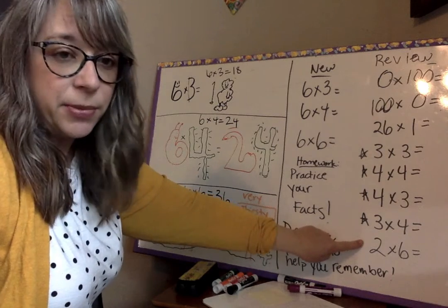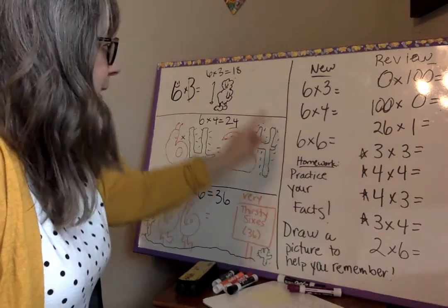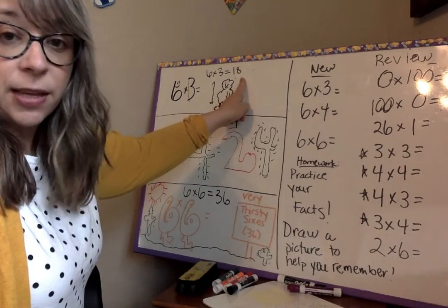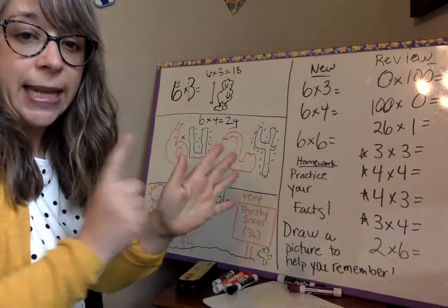Remember, if you know your 6 times 2, which is 12, you can count up 6 to get 6 times 3. So, 6 times 2 is 12, 13, 14, 15, 16, 17, 18.